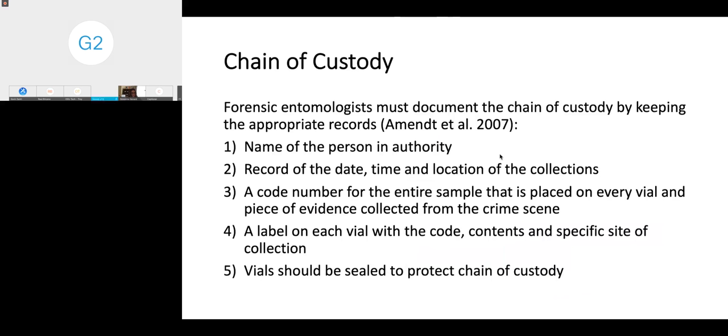So chain of custody is very important. You have to record the name of the person in authority, the date, time and location of the collections. You're going to have one code for the entire crime scene and you put that on every sample that you collect. On every vial that you have, you put the code and write down what the contents are and the specific site of collection. The vial must be sealed and that preserves the chain of custody.